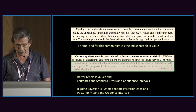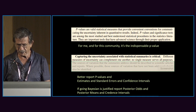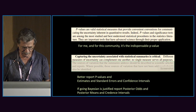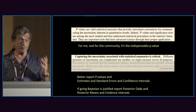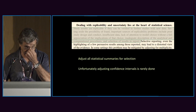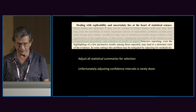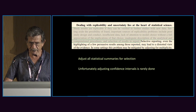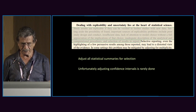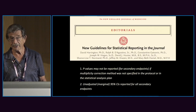The second issue: capturing the uncertainty associated with statistical summaries is critical. Different measures of uncertainty can complement one another, but no single measure serves all purposes. You cannot get rid of p-values and simply replace them with confidence intervals — indeed, both p-values, standard errors, and confidence intervals are needed. And if you go Bayesian, you also cannot use a single measure. Finally, dealing with replicability and uncertainty lies at the heart of statistical science. Selective reporting, even highlighting a few persuasive results, may lead to a distorted view of the evidence, and the problem may be mitigated by adjusting for multiplicity.